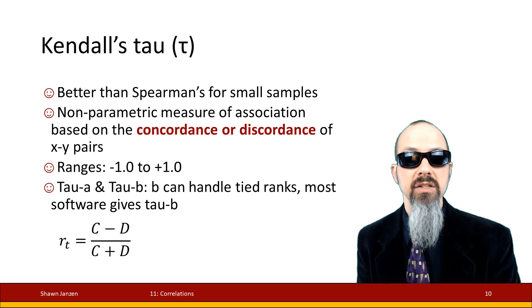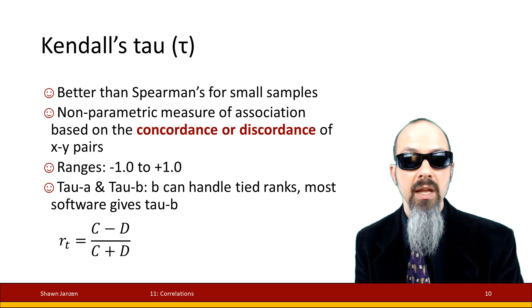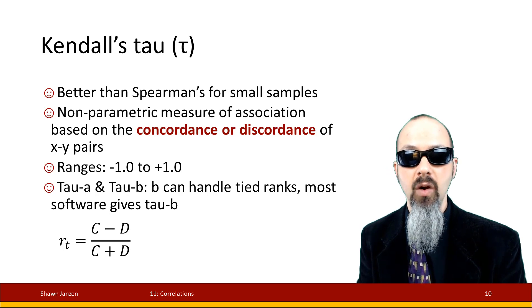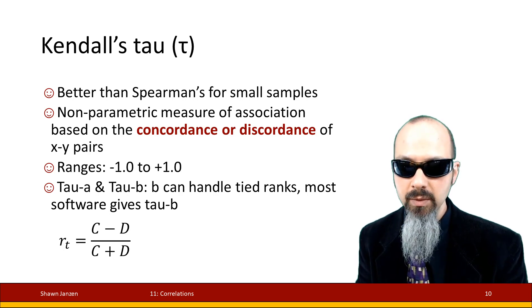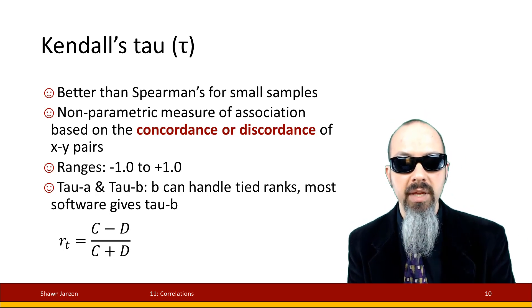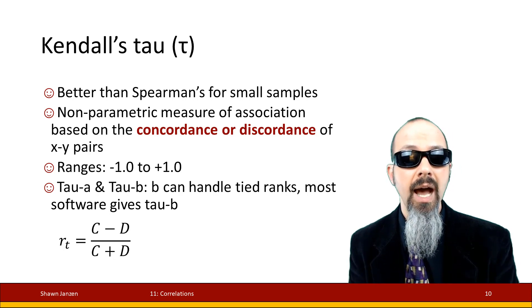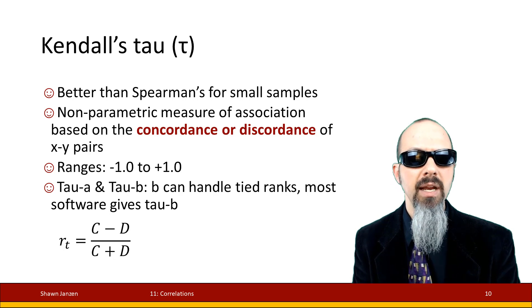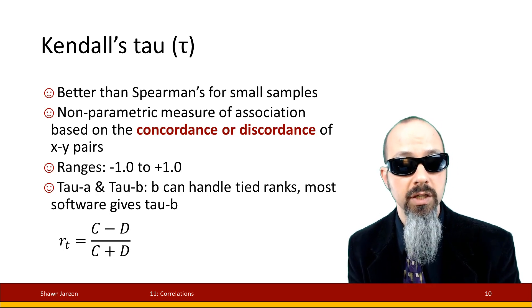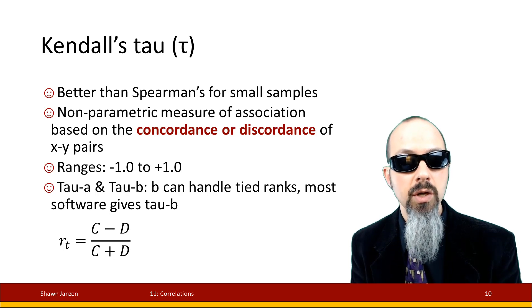Let's change gears to Kendall's Tau. Kendall's Tau is going to be better than Spearman's when you've got small samples — usually under 30. In this case, we're not talking about whether something is monotonic. We're measuring non-parametrically based on what we call the concordance or discordance of your x-y pairs. The tau values can vary between negative 1 and plus 1. There's tau a and tau b — tau b can handle ranked ties. Most software like R will give you tau b. I'm going to show you the formula for tau a as it's more user-friendly.